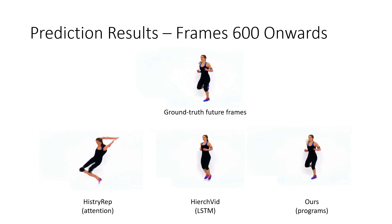Here are the prediction results for 600 frames and onwards. We observe that both the baselines have diverged and do not predict decent pose sequences, while our pose sequence still looks very similar to the ground truth future frames.